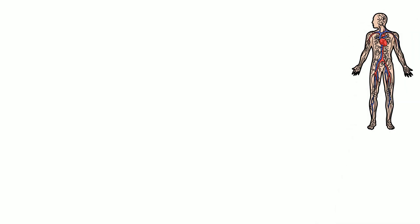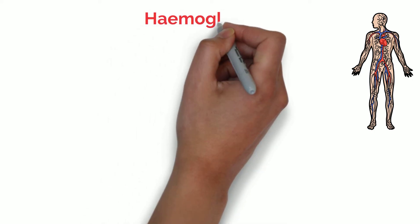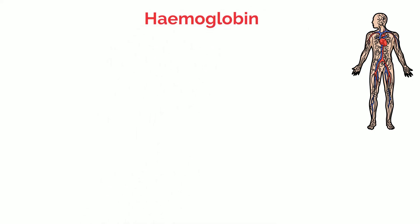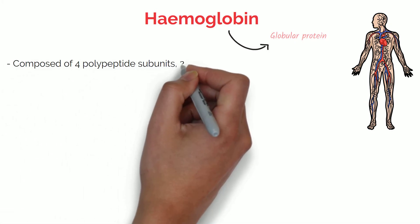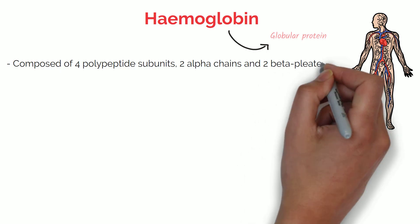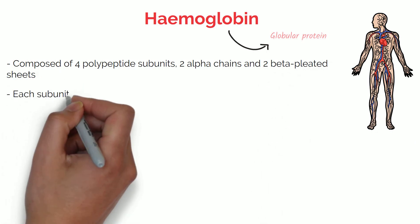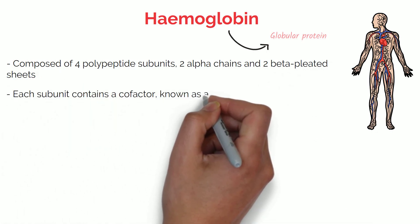The circulatory system in mammals is crucial for the transport of blood all around the body, providing tissues and organs with oxygen and nutrients in order to survive. One key component of red blood cells is haemoglobin, which is crucial for carrying oxygen around the body. Haemoglobin is a globular protein in its quaternary structure, composed of four polypeptide subunits — two alpha chains and two beta chains. Each subunit contains a cofactor known as a haem group.